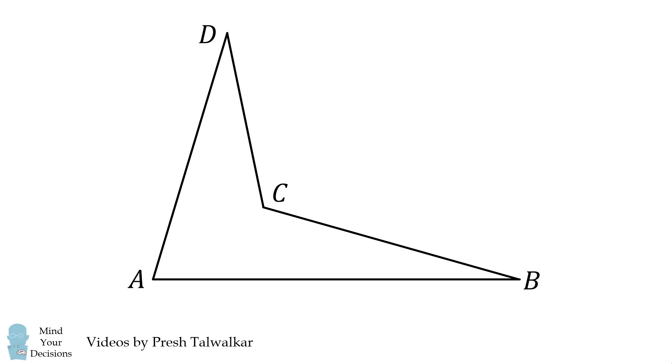In quadrilateral ABCD, sides AD and BC have the same length. Angle A plus angle B is equal to 90 degrees. If AB is equal to 20 and CD is equal to 10, what is the area of the quadrilateral ABCD?